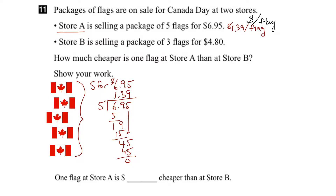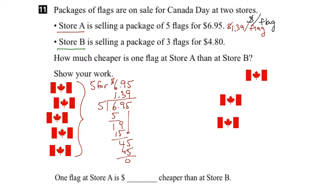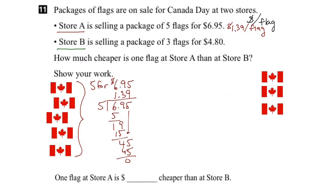Now let's look at store B. Store B sells three flags for $4.80. Let's bring in the flags for store B and rearrange them. So for this package we're getting three flags for $4.80.